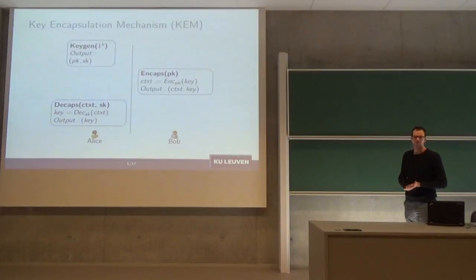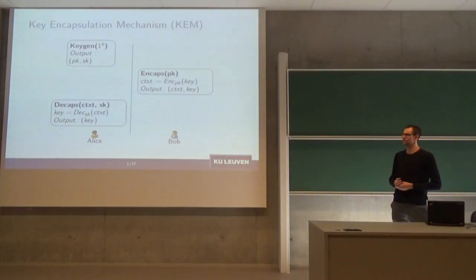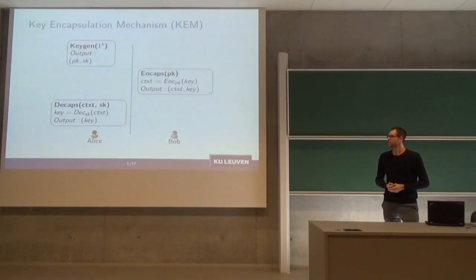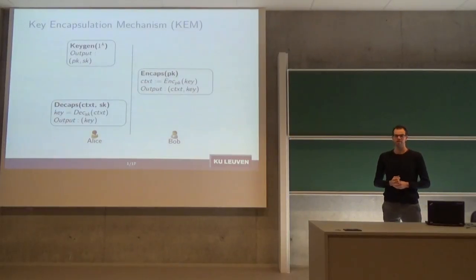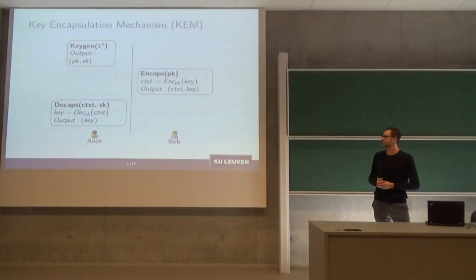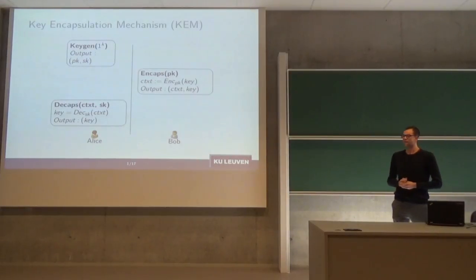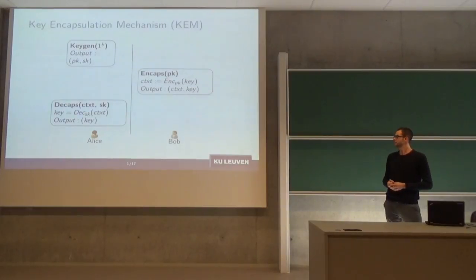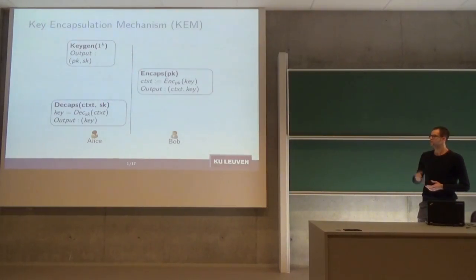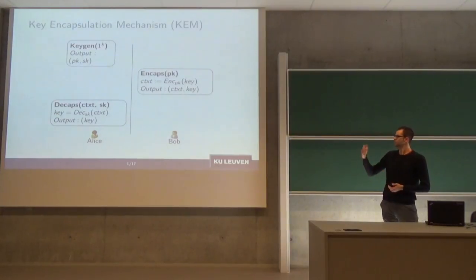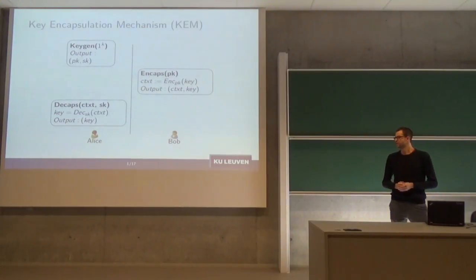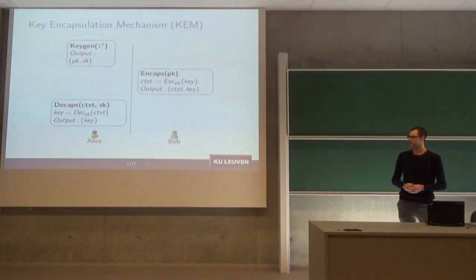We're not doing cryptosystems — we're going to look at the key encapsulation mechanism, so we'll always be working with three polynomial-time algorithms: key generation, which outputs a public and secret key pair; encapsulation, which takes the public key and encapsulates some symmetric key, outputting the ciphertext and the symmetric key; and decapsulation, which takes the ciphertext and the secret key, decrypts it, and outputs the symmetric key.